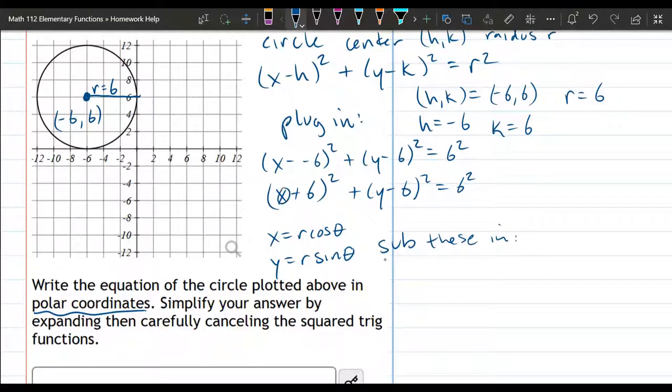So I see x right here. We're going to swap that out. So we have r cos theta in place of x plus 6 squared plus y is getting swapped out for r sine theta, and this one is a minus 6 squared equals 6 squared.